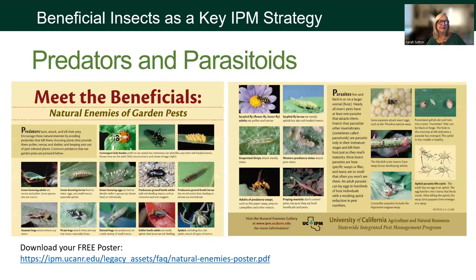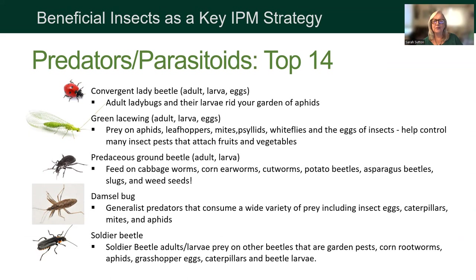Here's a great poster — you can download your own at the website link. These are the most common predators and parasitoids, and you want to recognize them in the garden and welcome them. The lady beetle — I still call them ladybugs — they're known for eating aphids. The green lacewing is also a really prolific aphid eater, as well as leafhoppers, mites, and psyllids. They're really pretty and I have seen them in my garden. When you see one, welcome it and say, 'Go make some more!'